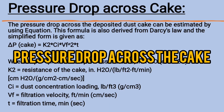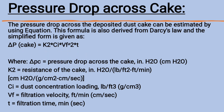Next, we understand the pressure drop or delta P across the dust cake. The pressure drop across the deposited dust cake can be estimated using an equation also derived from Darcy's law. The simplified form is: delta P_C = K2 × CI × VF² × T, where delta P_C is the pressure drop across the cake, K2 is the resistance of the cake, CI is dust concentration loading, VF is filtration velocity, and T is filtration time.